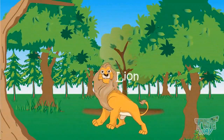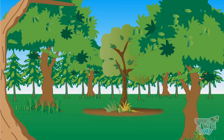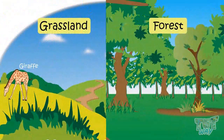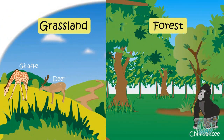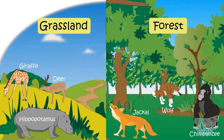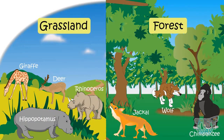Some animals live in natural homes. Lions live in a forest. Monkeys, squirrels, and koalas live on trees. Giraffes, deer, chimpanzees, wolves, jackals, hippopotamuses, and rhinoceroses live in forests and grasslands.